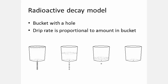Here's a model of a radioactive material: a bucket with a little hole at the bottom. Water leaks out at a rate proportional to the amount of water in the bucket. Ten drops per second when the bucket is 100 percent full, five drops per second when 50 percent full, one drop per second when 10 percent full, and so on.